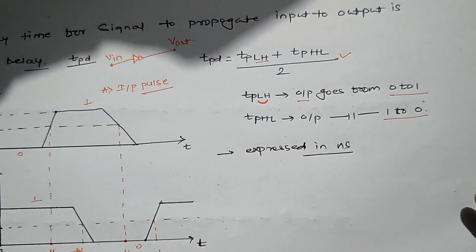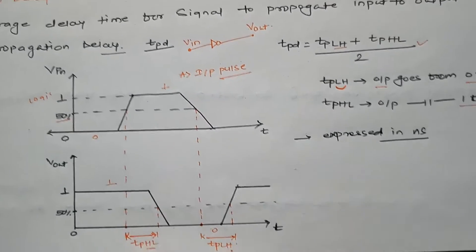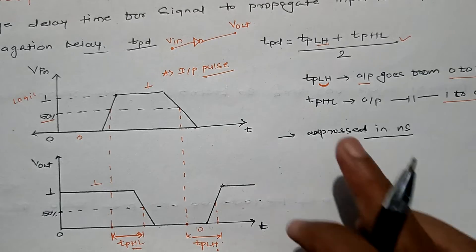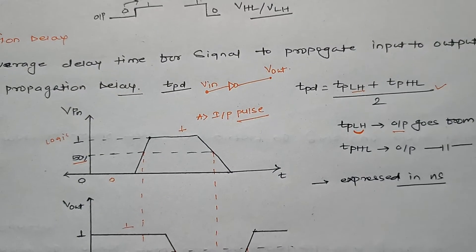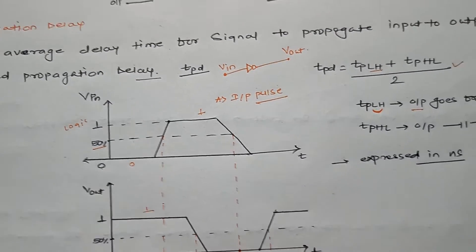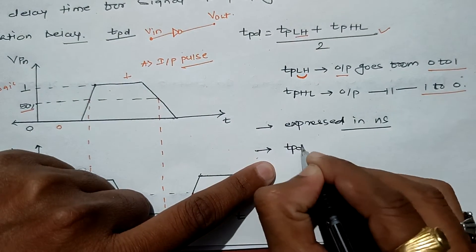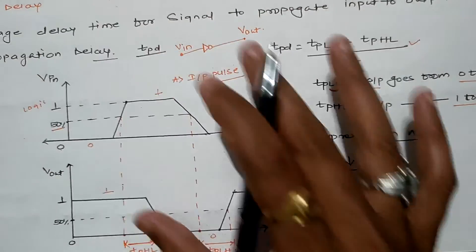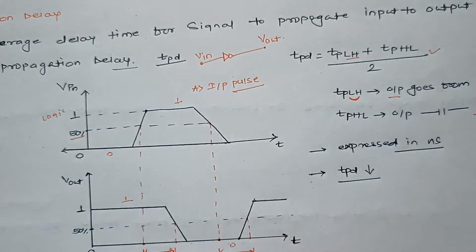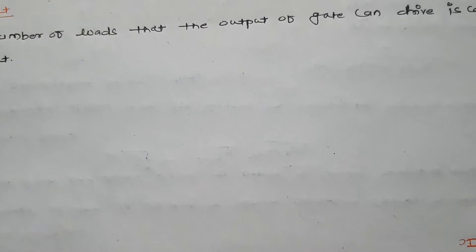Generally the propagation delay is always expressed in nanoseconds. We will observe in case of VHDL we will write 'A XOR B after 5 nanosecond' or 'after 10 nanosecond'. The propagation delay should be as low as possible when designing any circuitry.